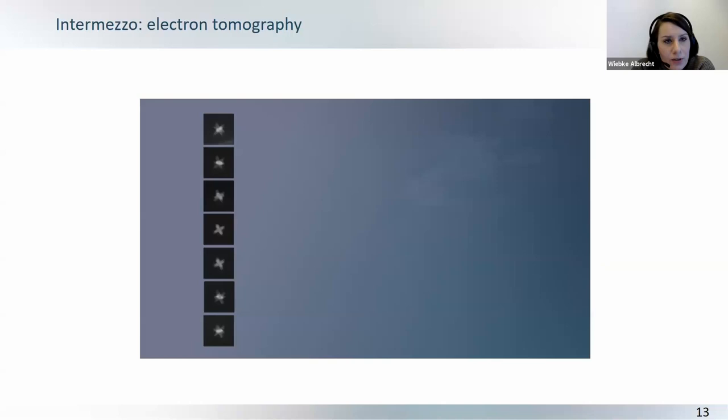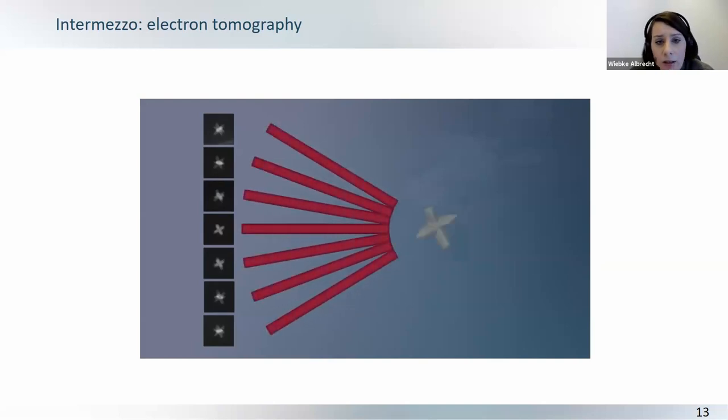And this is just a short intermezzo of how this actually works. So, in the electron microscope, you can tilt your particle, so you tilt your holder, and you get projection images from different directions. And then you can basically use mathematical algorithms to calculate the three-dimensional shape of your nanoparticle, but not only the shape, but the real three-dimensional volume.